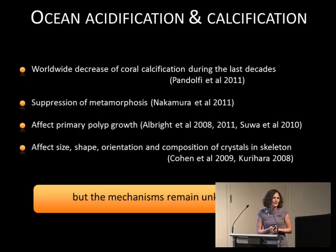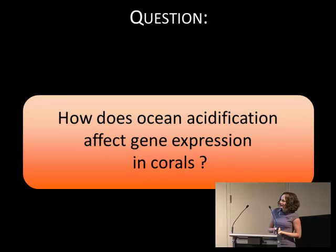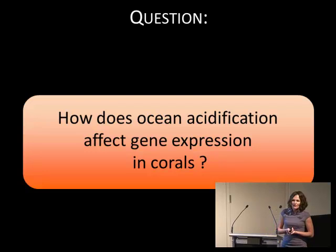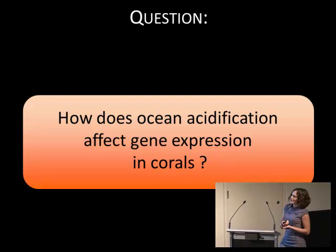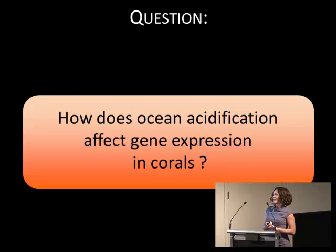But the mechanism by which ocean acidification affects coral calcification remains unknown. This is partly due to the fact that the basis of coral calcification are completely unknown. So the question today is: how does ocean acidification affect gene expression in corals? Looking at gene expression is a good way to get insight into the mechanisms driving a decrease in coral calcification, because changes in gene expression are the quickest way for an organism to respond to environmental stress.